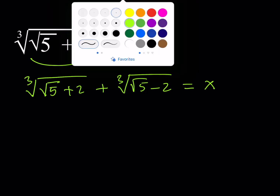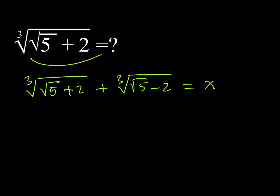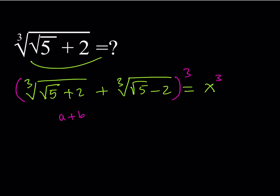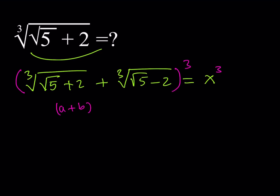I'm going to cube both sides. When cubing, I'd like to use a special format: if you are cubing (a + b), you can write it as a³ + b³ + 3ab(a + b). In this case, a + b is going to be my x.